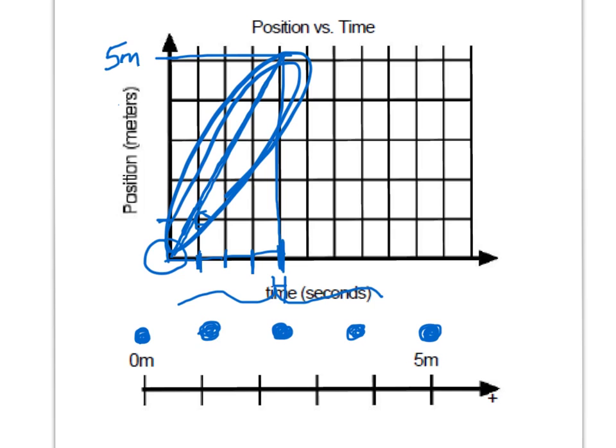So there's my dots. So here's from 0 to 1 second. Here's from 1 to 2 seconds. From 2 to 3 seconds. From 3 to 4 seconds. So it took 4 seconds to go 5 meters.